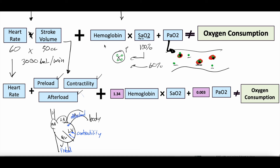For the arterial oxygen content, using the same equation with constants: hemoglobin is multiplied by 1.34 because hemoglobin is much more important to arterial oxygen content than dissolved oxygen, which is multiplied by 0.003. Check out the linked video for a more detailed dive into this equation. This is the framework we'll use to understand the four shock states — the problem causing shock and the interventions to fix it will both relate to parts of this equation.